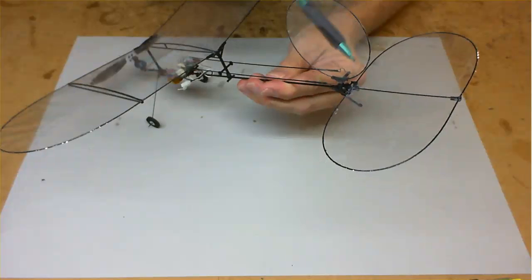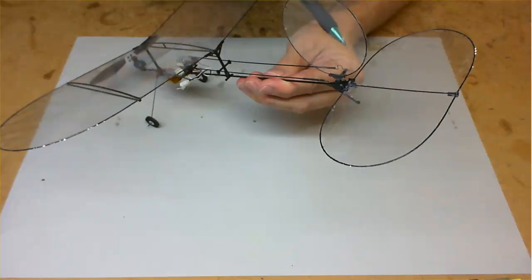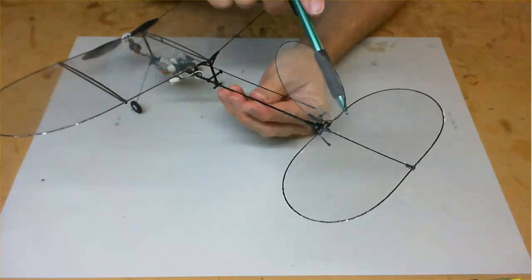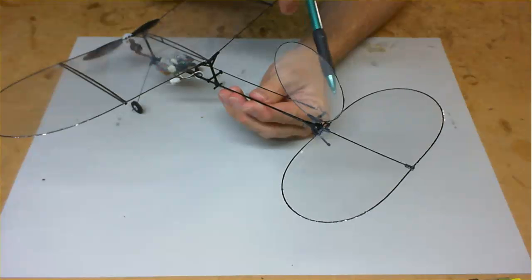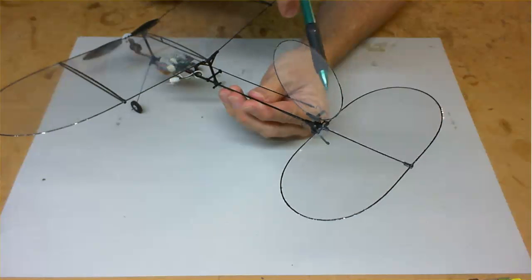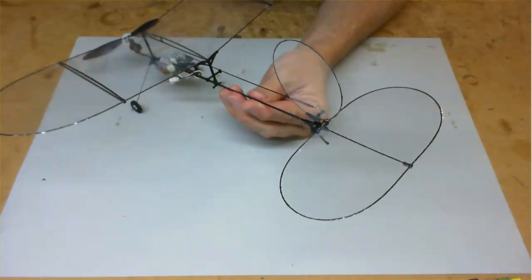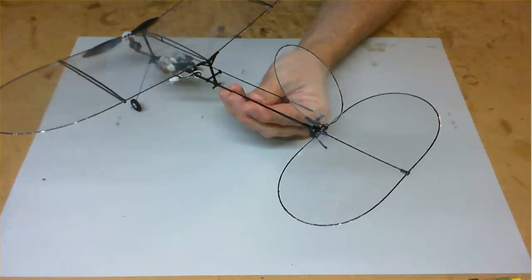And also for the control surface throws on the back. You can see the control surfaces on the back here are quite large. So they need to be dialed down to about 50-60% on your transmitter with the throws.